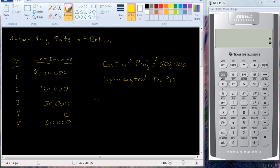Average book value is simply going to be the book value $500,000 at the beginning of the period, plus its value at the end of the period, divided by two. So this is just going to be $250,000.